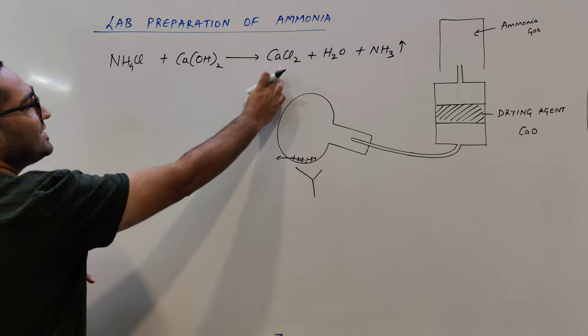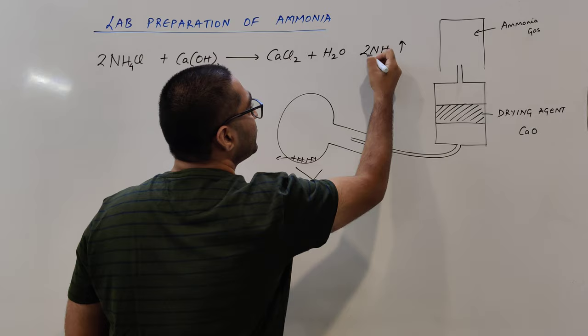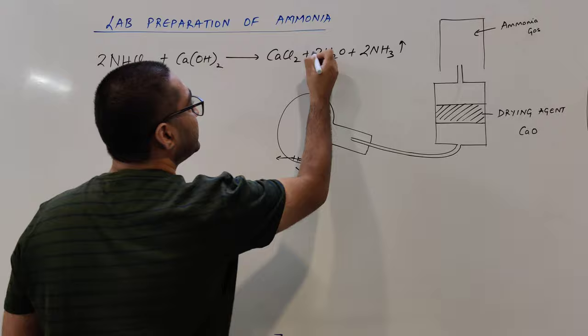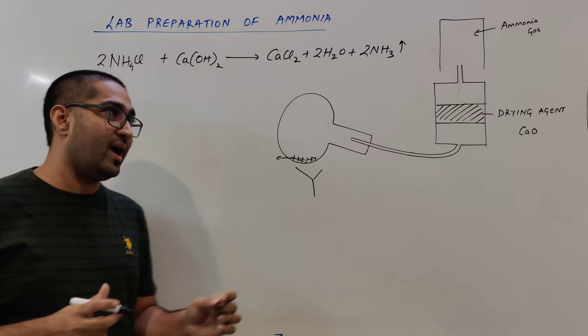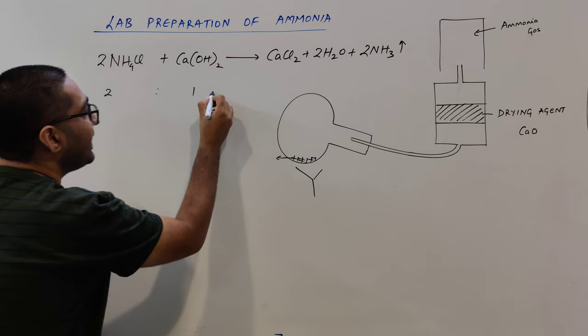We balance this equation: there is a coefficient of 2 on ammonium chloride, giving 2 ammonia molecules. Oxygen is balanced by placing 2 on the water. The equation is balanced. The ratio of the reactants is 2:1, and this is 2:1 by volume.